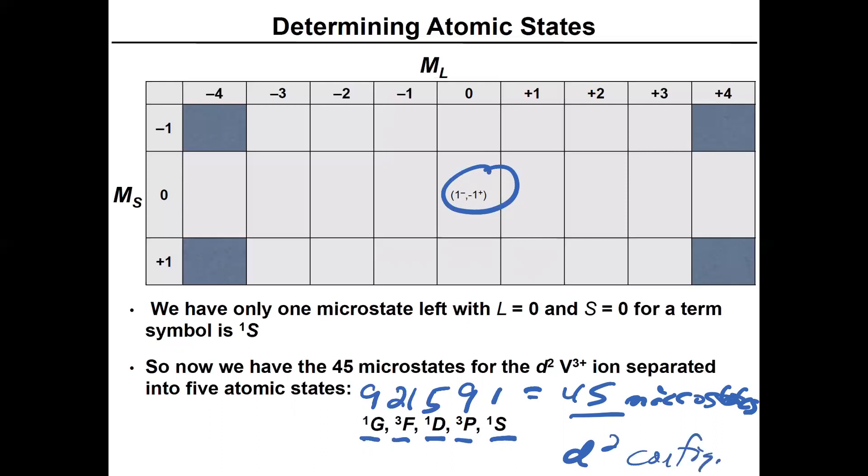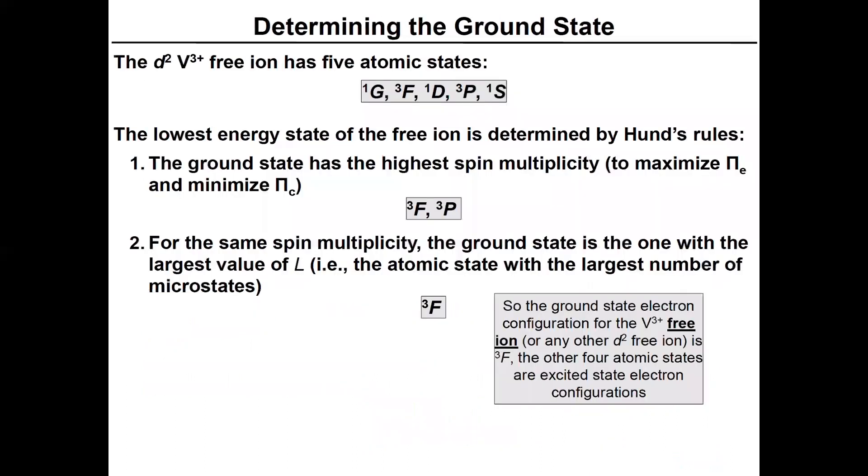That's the deduction process. It's the same process over and over again. We've established that we've got these five atomic states and the lowest energy goes back to using Hund's rules. So you want the highest spin multiplicity. There's only two triplets here. So it's going to be one of those, but for the states of the same spin multiplicity, the ground state has to have the larger value of L. So triplet F is the ground state and that's really it. That's the most relevant configuration for figuring out the ground state properties. Then the four other states that are mentioned up here are all excited states.